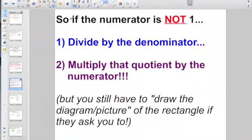So basically the long and the short of it is, if the numerator is not one, you still divide by the denominator. Only now, you would have to multiply that quotient by the numerator. But you're still going to have to draw the diagram or the picture of the rectangle if the book asks you to.